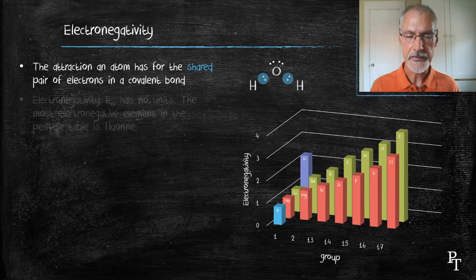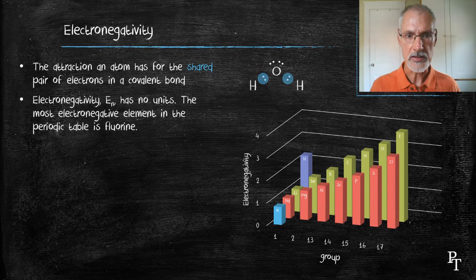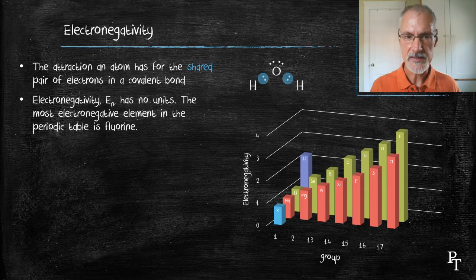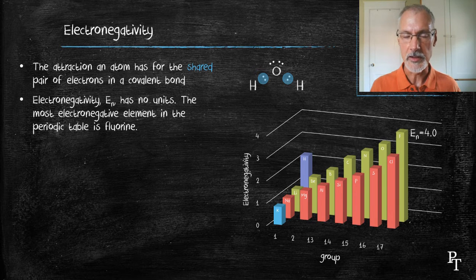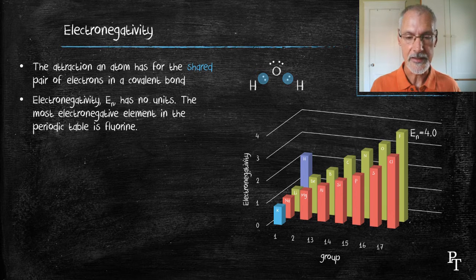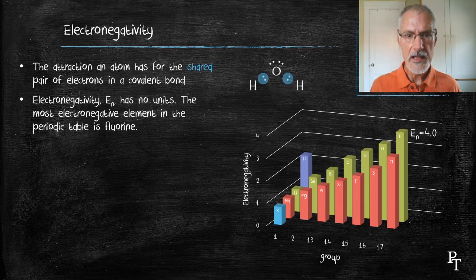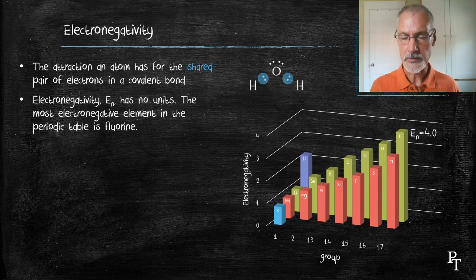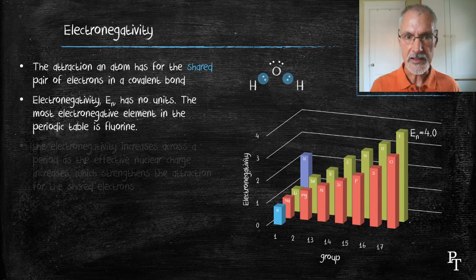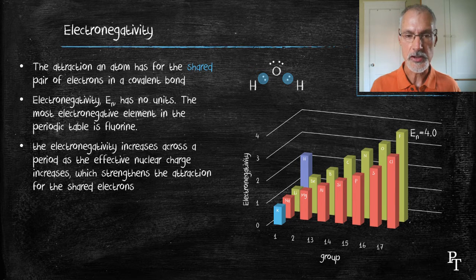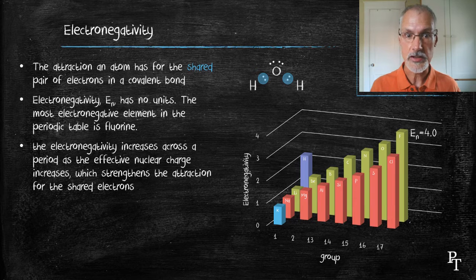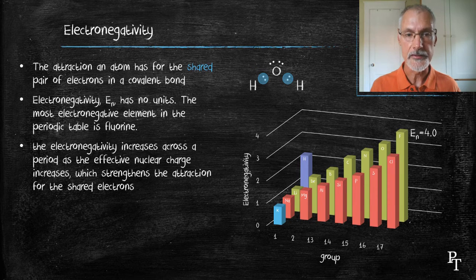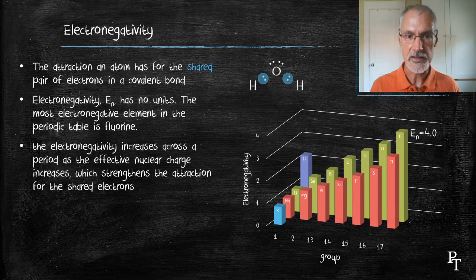Electronegativity doesn't have units. Linus Pauling essentially coined what electronegativity was, and he arbitrarily has given fluorine a value of 4, and everything else is less than that. Again, we'll notice a similar pattern moving across the table. We'll see increases in the attraction for the electrons in a shared pair. Again, that happens because of an increase in the effective nuclear charge. More protons in the nucleus constitute a greater pull on the electrons.